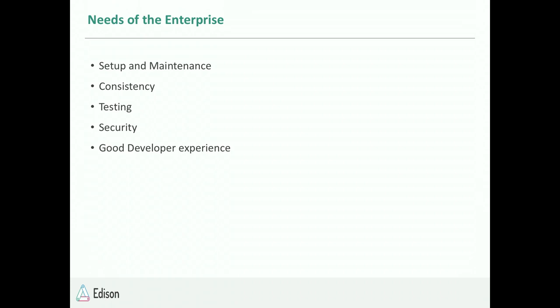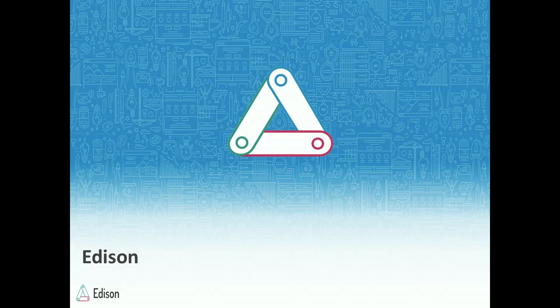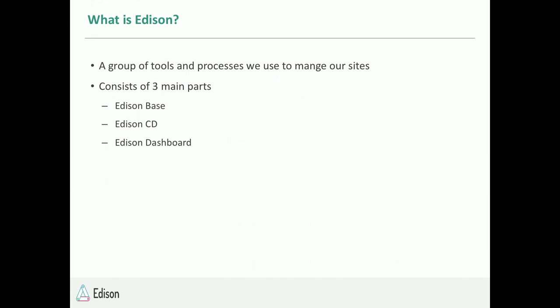We've been working within those constraints on a team we now call Edison. Edison is part of an engineering team at a large pharmaceutical company. We used to be called the platform team, but we've re-approached this with our D8 platform — making it more of a product. It consists of three main parts: Edison Base, Edison CD which is our continuous delivery, and Edison Dashboard.